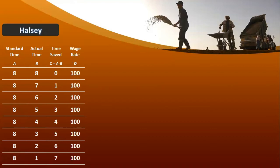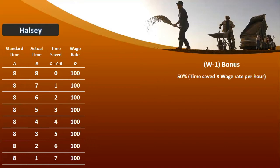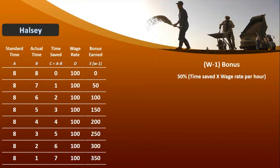Wage rate: standard hai — jitna actual kaam hua hai us mein 100 rupees per hour, wage rate 100 rupees per hour. Ab Halsey bonus plan ka formula kya hai? 50% of time saved multiplied by wage rate per hour — jo 100 rupees hai. Time saved ke given conditions ka 50% aapko bonus milega. Is formula ke baad humne yahan pe calculation di hai aur formula ki working di hai.